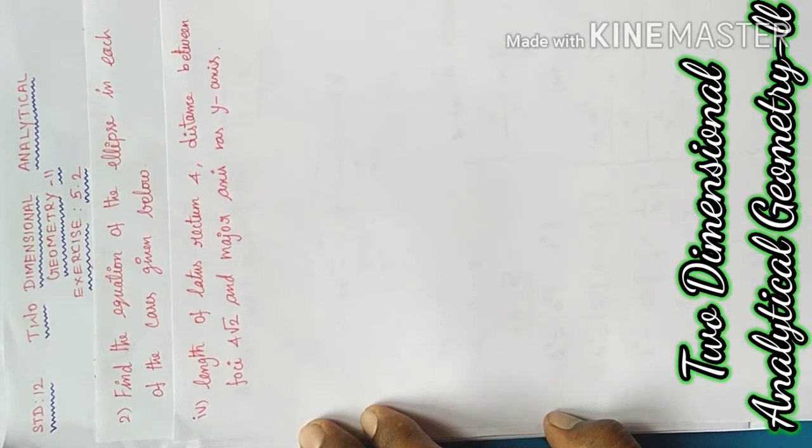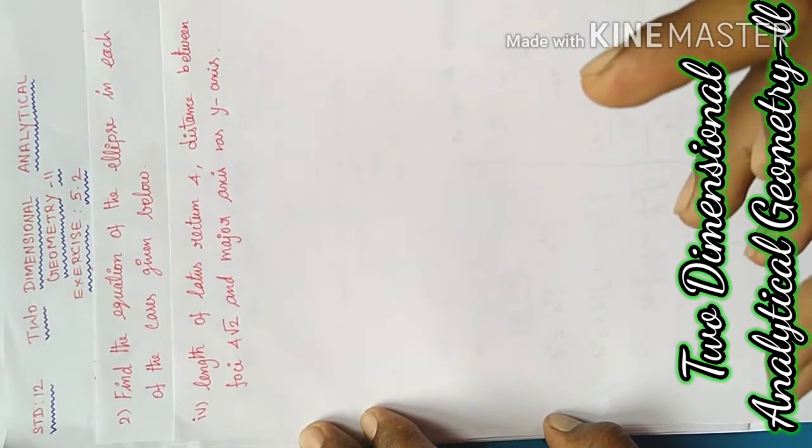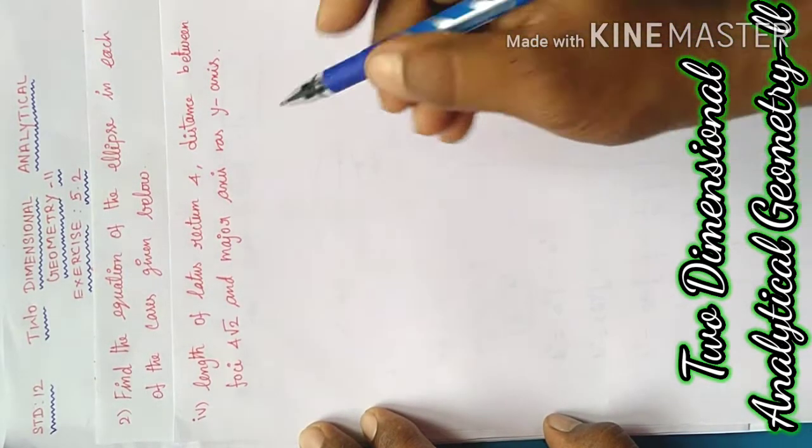Subdivision 4: length of the latus rectum is 4, distance between foci is 4 into root 2, and major axis as y-axis. Let's put the information on the ellipse diagram. The ellipse is based on the y-axis.